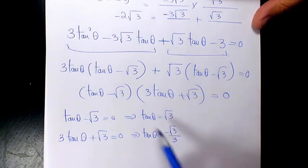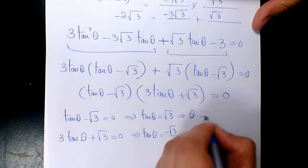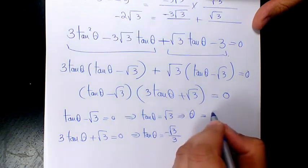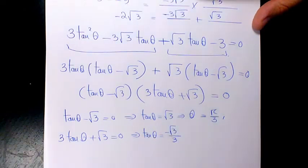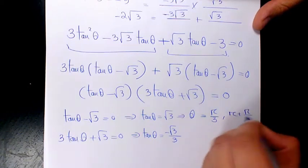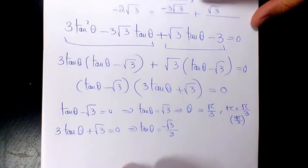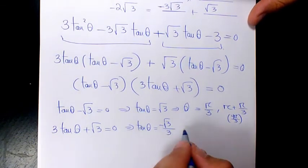Now we find theta. Theta equals tan inverse of root three, which is pi over three. Since it's positive, tan is also positive in quadrant three, giving pi plus pi over three, which is four pi over three. For the second case, tan theta equals negative root three over three.